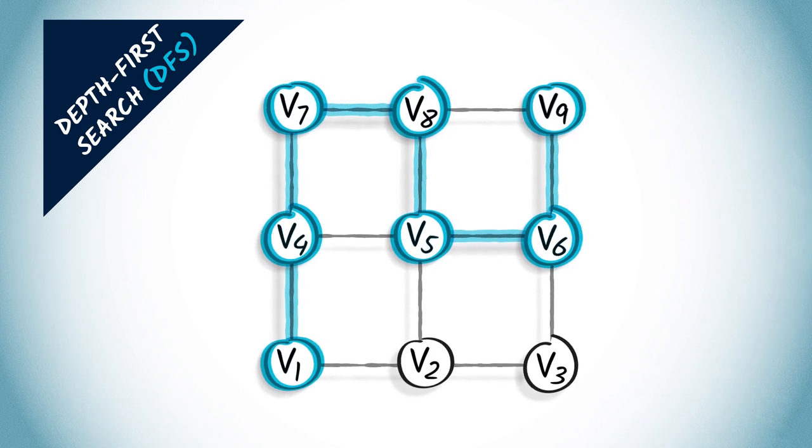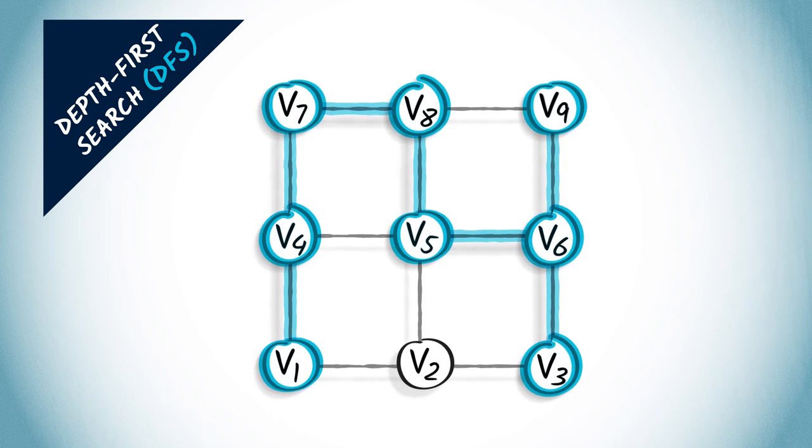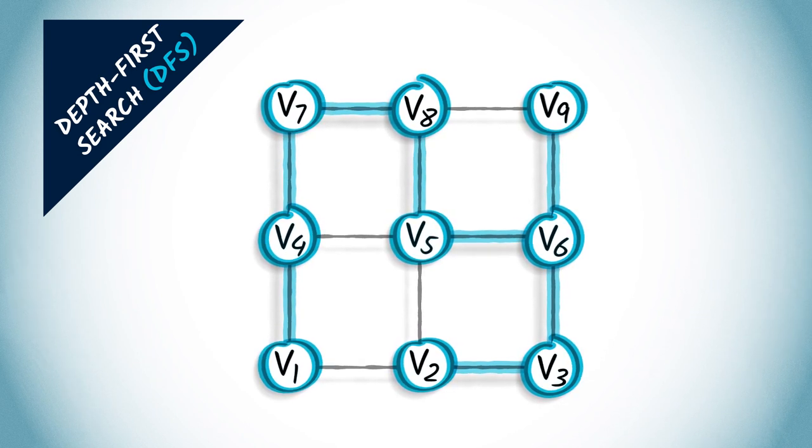We go back to the last vertex, for which there was an unexplored neighbor, which is the previous one, and we go down. From this vertex, there's only one remaining unexplored neighbor, which is the one on the left.